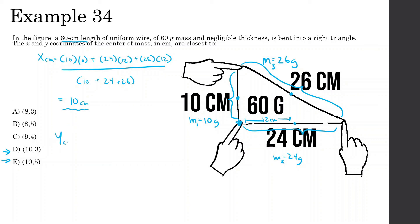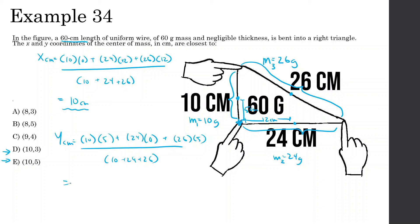For the y-direction: m1 (10 grams) is on the y-axis going up — its center is 5 centimeters up, so contribution is (10)(5). m2 (24 grams) is on the horizontal, so y = 0. m3 (26 grams) also has its center 5 centimeters up. Divide by 10 plus 24 plus 26. The result confirms that answer D is correct.